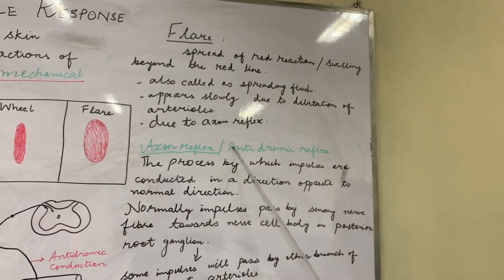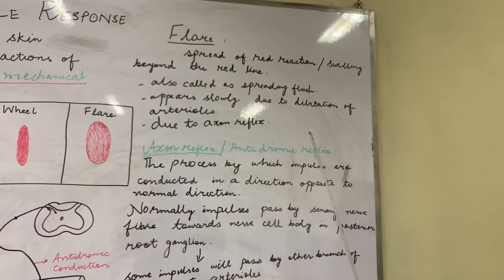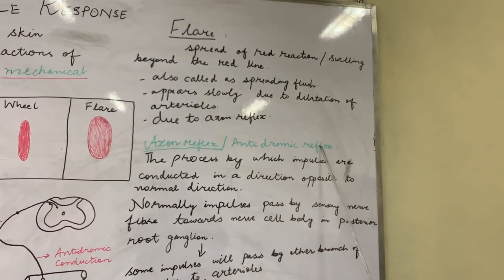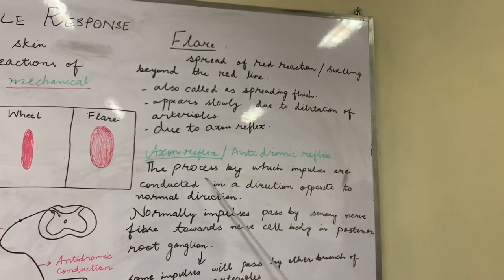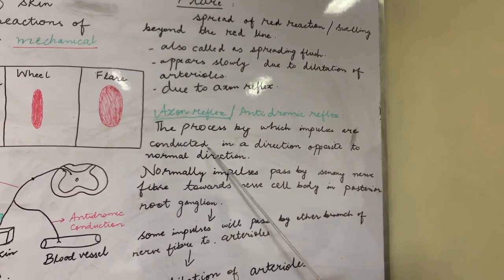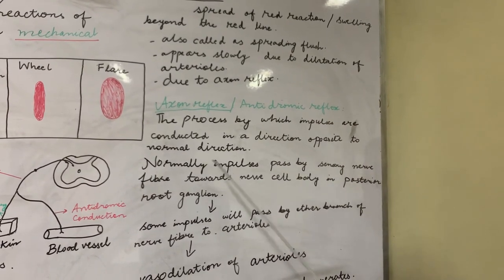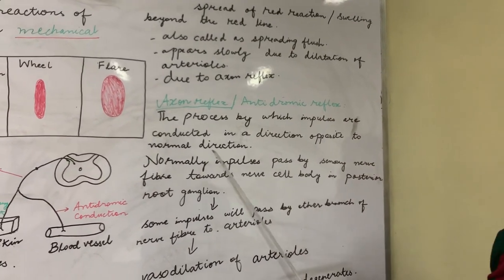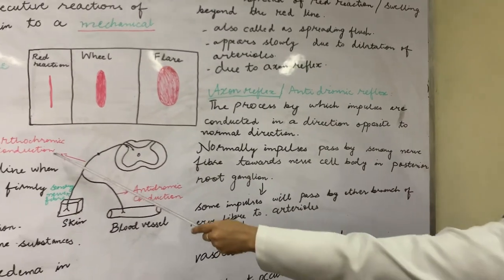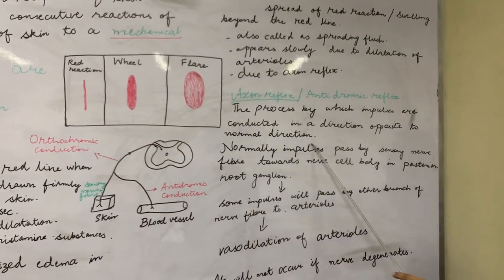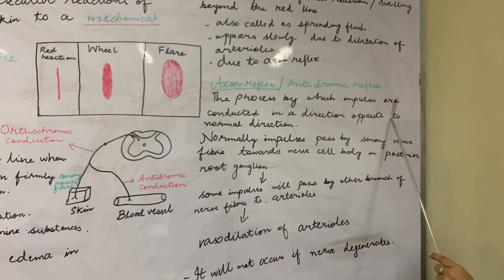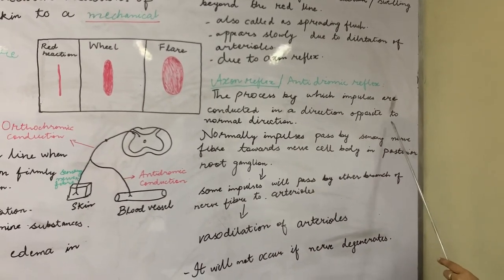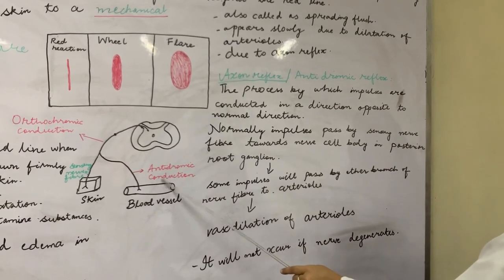The reflex involved behind the flare is the axon reflex, which is due to antidromic conduction — also called the antidromic reflex. It is the process by which impulses are conducted in a direction opposite to the normal direction. Normal direction conduction is called orthodromic conduction, but in this condition impulses are transmitted in the opposite direction, which is called antidromic conduction.